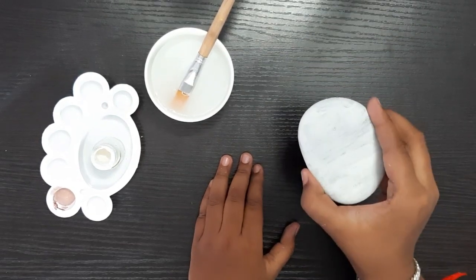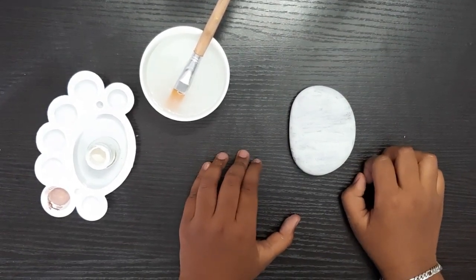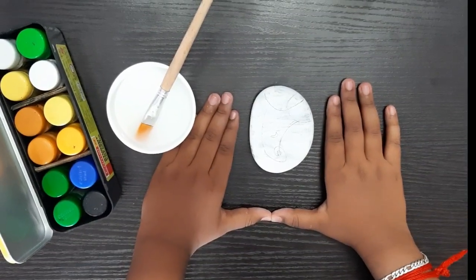This is how I made the base. Step 2. You have to draw the picture which you want to paint. This is the picture I have sketched.